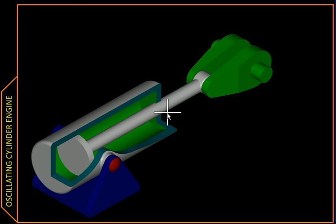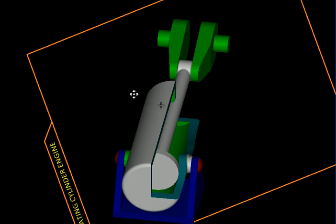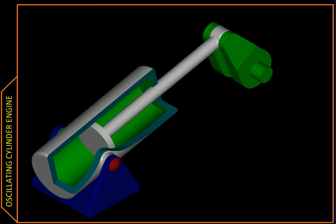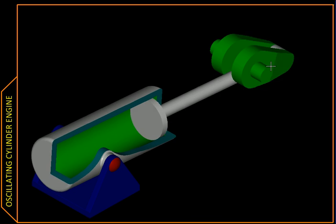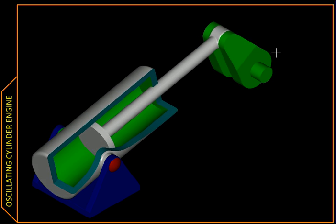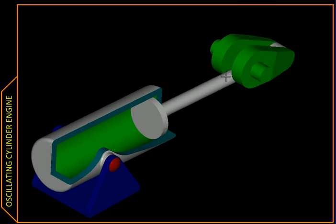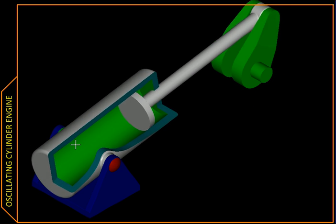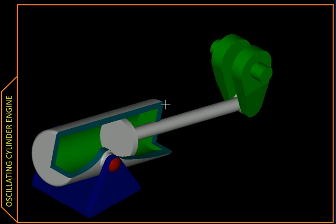So over here we have what is called an oscillating cylinder engine. So here we have the crank, fully rotating crank, that's our input. Attached to that is the piston, and the piston is moving back and forth in a cylinder which is free to oscillate.